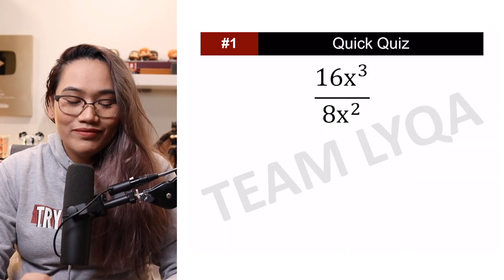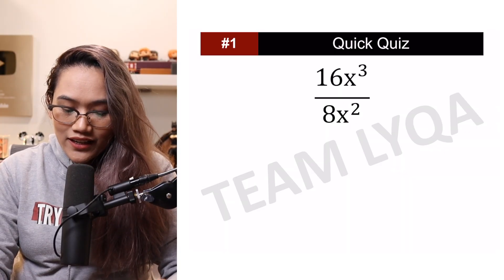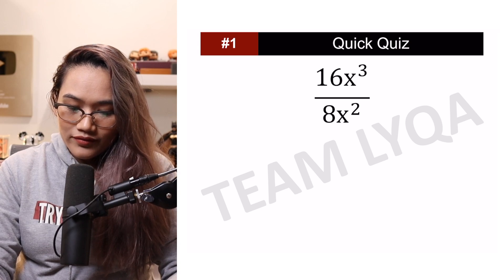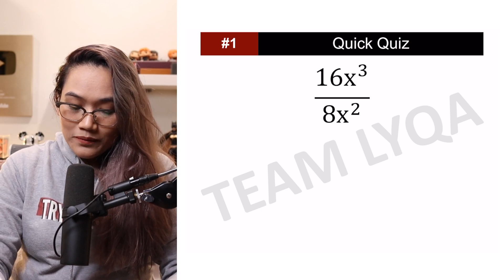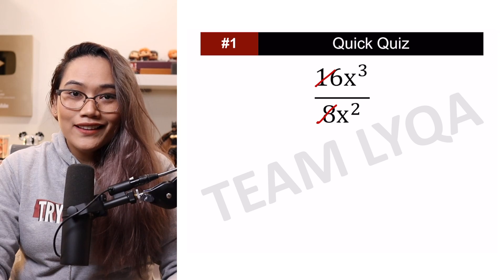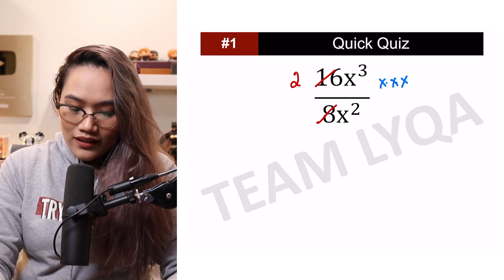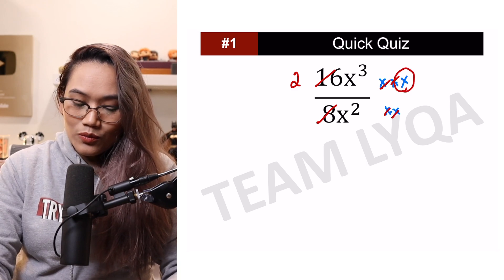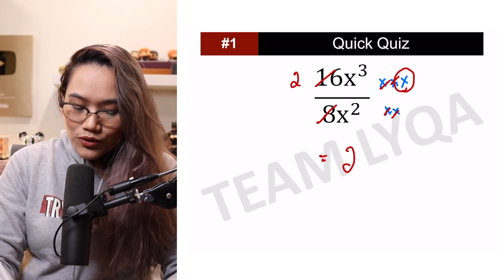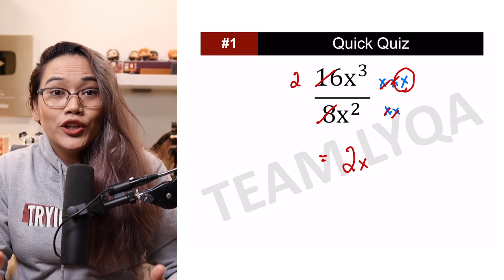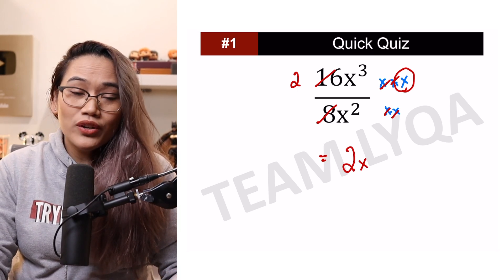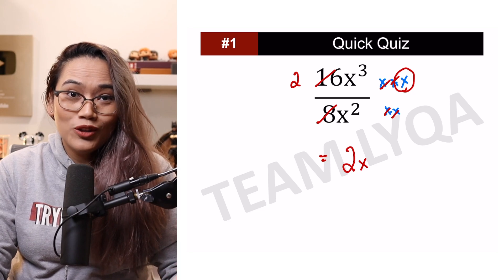Alright, let's see how you did. Yung first question natin: 16x cubed over 8x squared. So again, we're going to just split this. Dalawang 8 ang 16, so may iiwan yung 2 sa itaas. Yung x cubed — or tatlong x — dito dalawa lang. Makakancel yung dalawa, may iiwan yung isang x sa itaas. Which means the answer here is 2x. The more you do it, the faster you'll get — and hopefully maabot sa point na tinitinan nyo na lang, alam nyo na yung sagot.